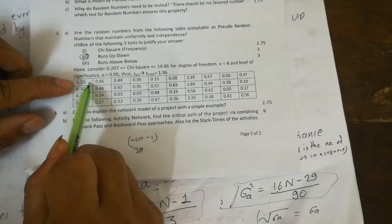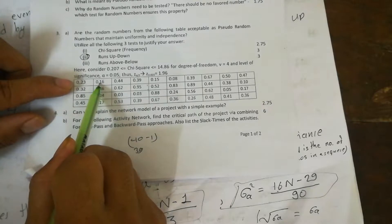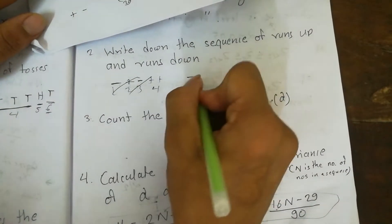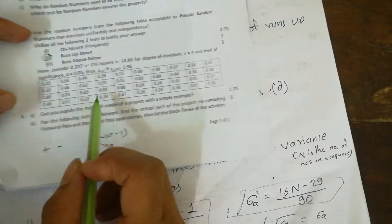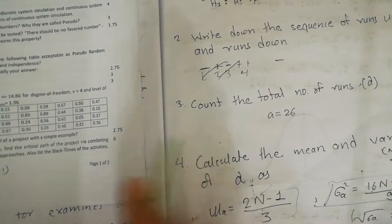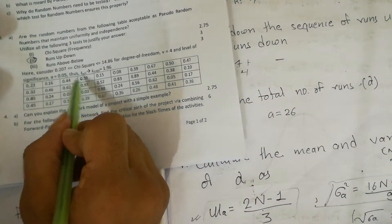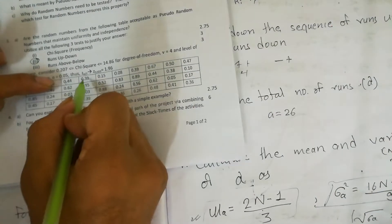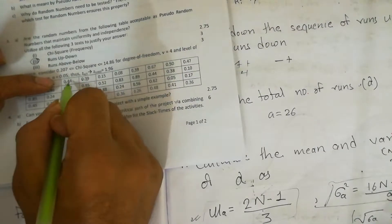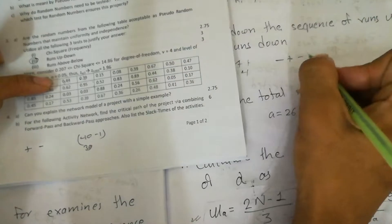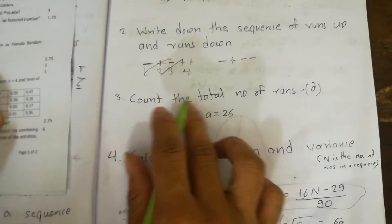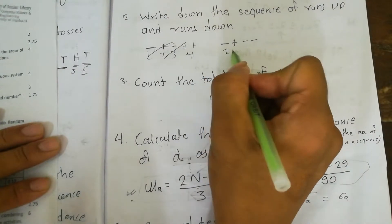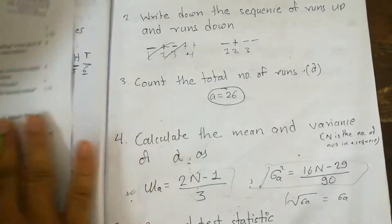We compute differences from each value to the next. If the current value is smaller than the next, the difference is negative (runs down); if the current value is greater, the difference is positive (runs up). We then assign plus or minus signs to form the sequence. Step 3 is to count the total number of runs. For this example, counting the runs gives us a total of 12 runs, where a = 26.